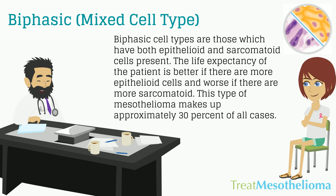Biphasic cell types are those which have both epithelioid and sarcomatoid cells present. The life expectancy of the patient is better if there are more epithelioid cells, and worse if there are more sarcomatoid. The cells usually range in separate groups within a biphasic tumor, which is why biopsies are typically taken from different parts of the tumor.